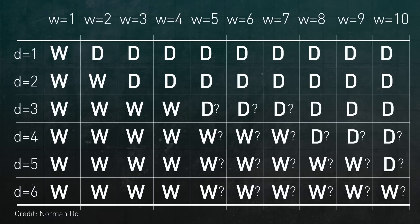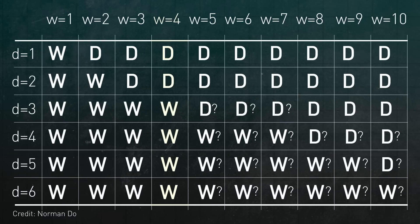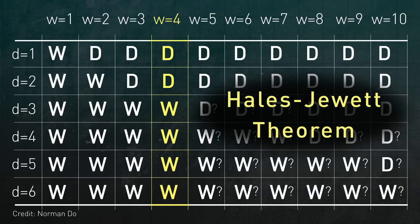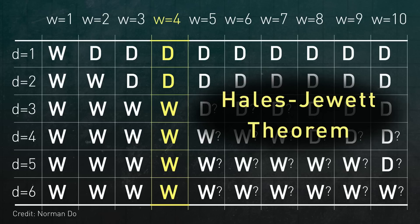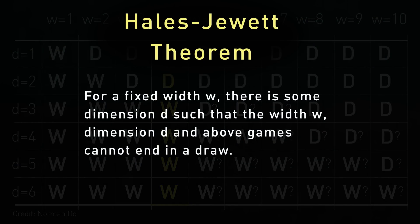Now, let's focus on one specific column. For example, in this one, we're fixing the width of the board at 4, but we're increasing the dimension. The Hales-Jewitt theorem says that as we look down the column, it will eventually become all wins for X. More specifically, it says that for a fixed width W, there is some dimension D such that the width W dimension D and above games cannot end in a draw.